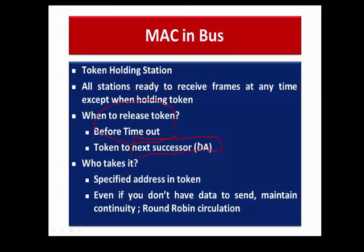Every station monitors the medium and checks whether its address is specified in the token. Even if the specified successor has no data to transmit, it must pick up the token and pass it along to maintain continuity by putting the next successor's address in the token. If a station does have data, once it holds the token it can send data until its token holding time expires.